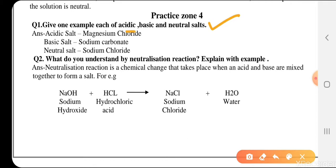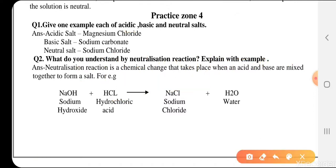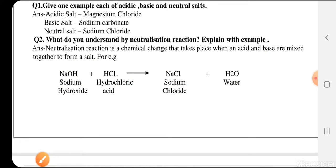Next is Practice Zone 4: Give one example of acidic, basic, and neutral salts. Acidic salts are those in which strong acid and weak base are used. Basic salts are those in which strong base and weak acid are used during neutralization reaction. An example of acidic salt is magnesium chloride. Basic salt example is sodium carbonate. Neutral salt is sodium chloride, which we use in our homes. Neutral salt is formed when we mix strong acid plus strong base.